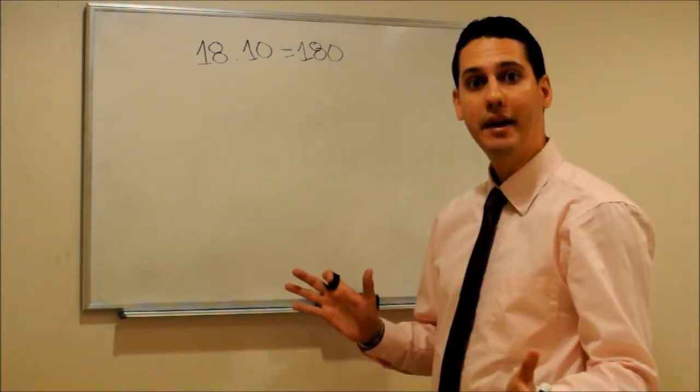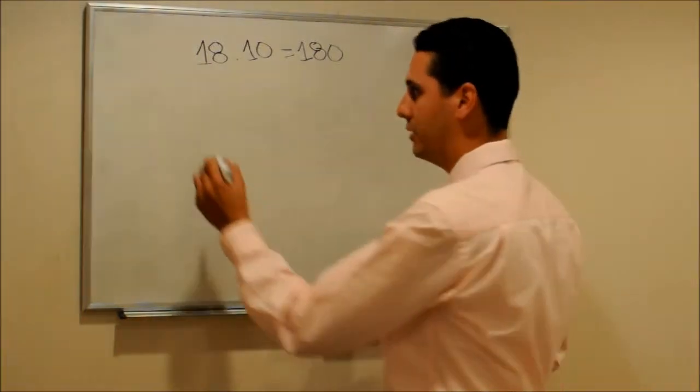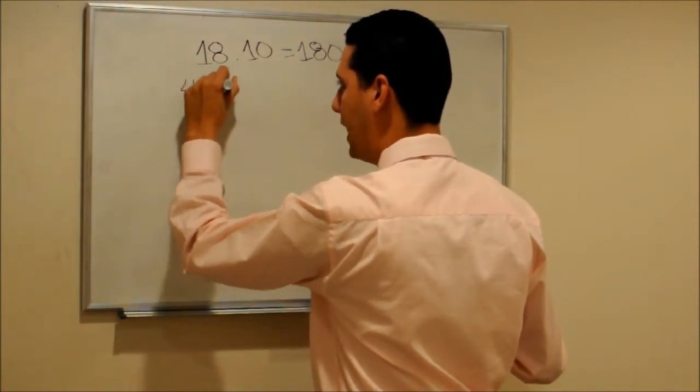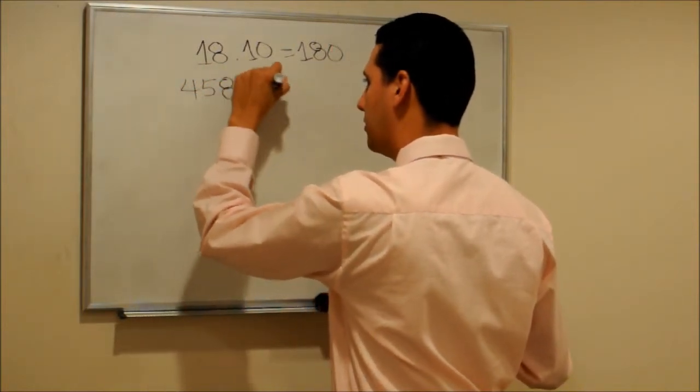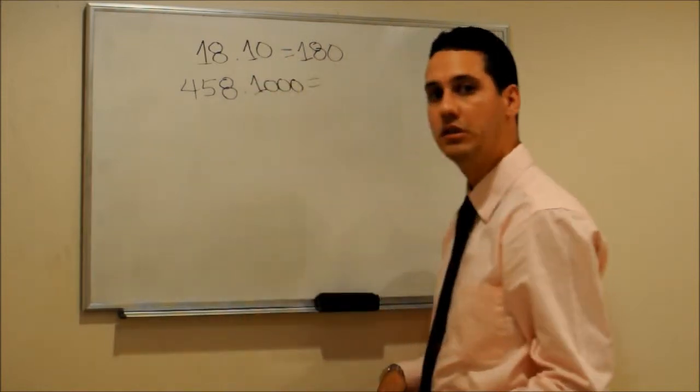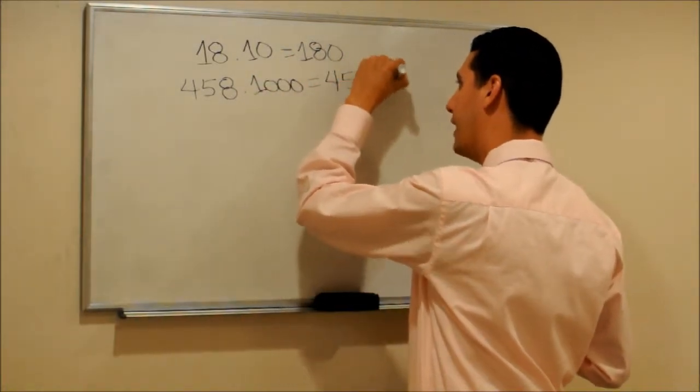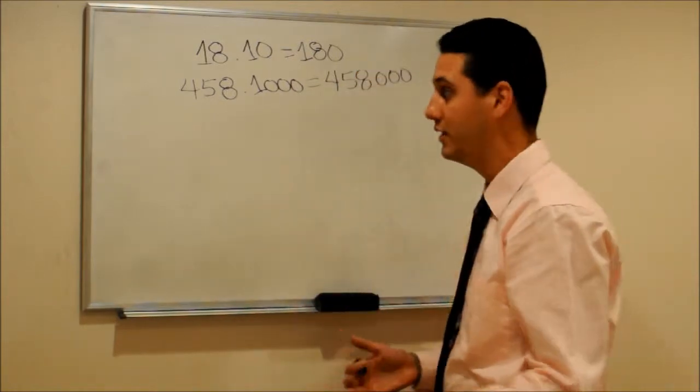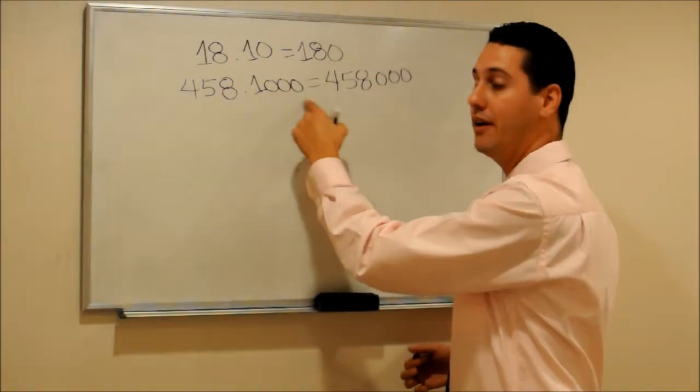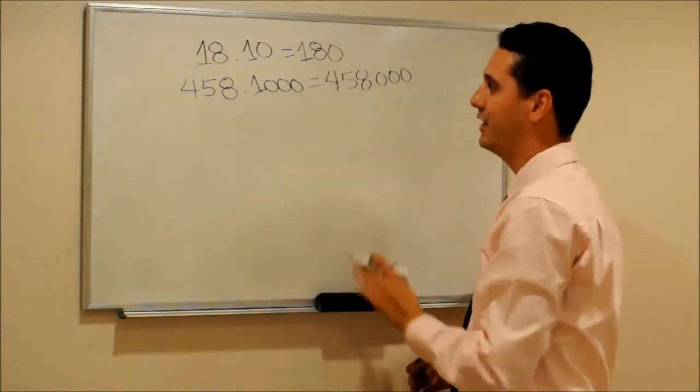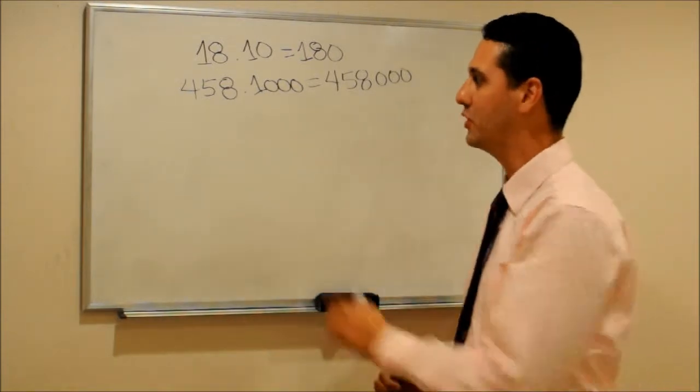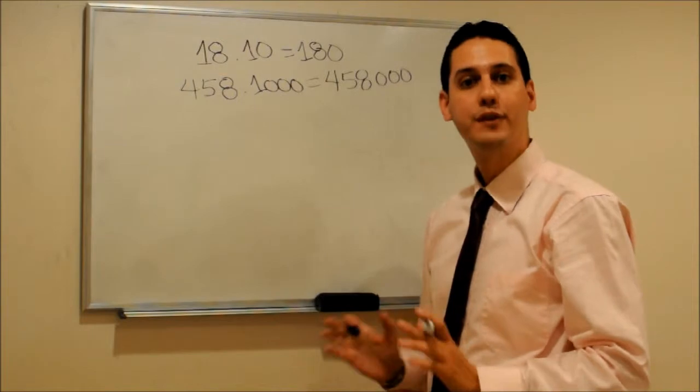What if we want to multiply by 1,000? For example, 458 times 1,000. So the answer would be 458,000 because we need to add as many zeros as we have here. Actually, this is easy because 1,000 is considered a power of 10.